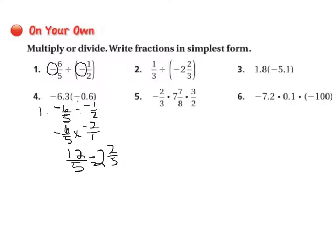Number 2: 1/3 divided by negative 2 and 2/3. We want to rewrite this with the negative 2 and 2/3 as a mixed number. So 1/3 divided by 2 times 3 is 6 plus 2 is 8, so that would be negative 8/3. Then we keep, change, flip. So 1/3 times negative 3/8. We can cross cancel: 3 goes into itself once and once. That equals 1 times negative 1 is negative 1 and 1 times 8 is 8, so it's negative 1/8.